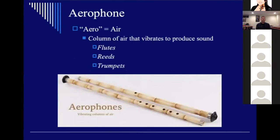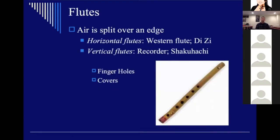We'll start with the aerophone. Aerophone means a column of air — you take a tube and blow air through it. The question is how do you get the air to vibrate and produce a sound? There are four categories, but tonight we'll focus on the three original Sachs-Hornbostel categories: flutes, reeds, and trumpets.